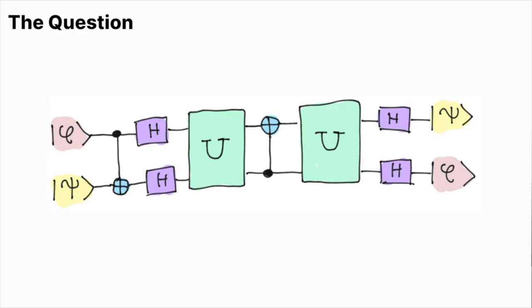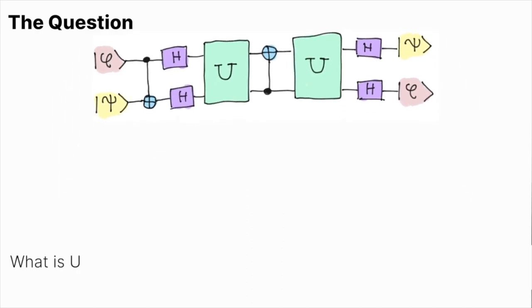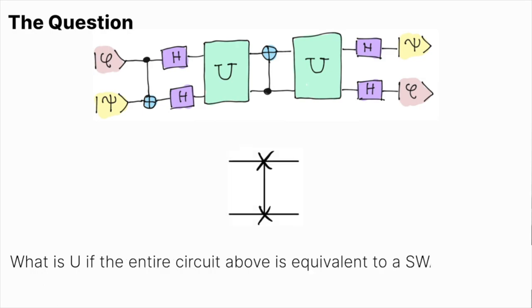The statement of the problem gives us a specific template that we can see here with some CNOT gates, some Hadamard gates, and one unknown operator U. We are asked to find, to define this U operator in such a way that this template is completely equivalent to the SWAP gate.